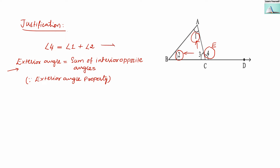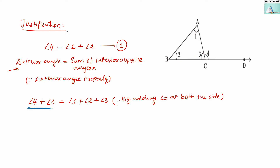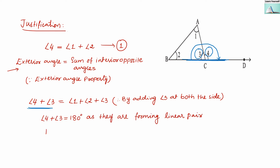Now in this equation, when we add angle 3 to both sides, we get angle 4 plus angle 3 equals angle 1 plus angle 2 plus angle 3. We know that angle 3 and angle 4 are forming a linear pair — they are angles on a straight line. So the sum of their measures will be 180 degrees. Therefore, angle 4 plus angle 3 equals 180 degrees, and we can substitute 180 degrees in place of angle 4 plus angle 3.